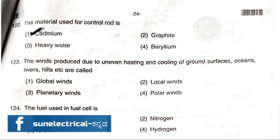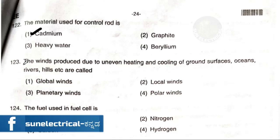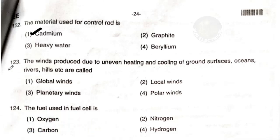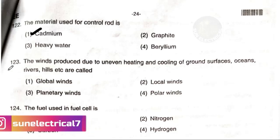The wind produced due to uneven heating and cooling of the ground surface — ocean, river, hills — is called local wind or land and sea breeze.